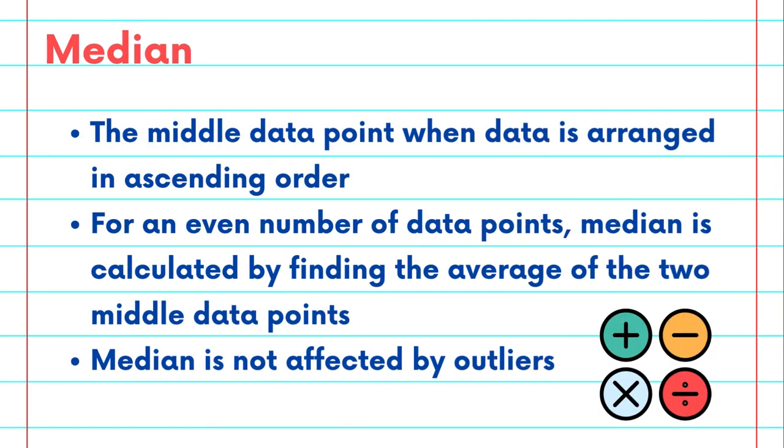The median is the second measure of central tendency. It is the middle data point when you arrange all of your data points in ascending order. For an even number of data points, you can find the median by taking the average of the two middle data points. Unlike the mean, the median is not affected by outliers and is typically a good representative for skewed data.